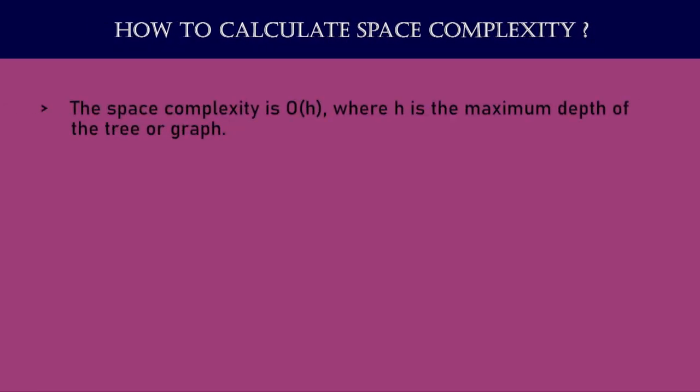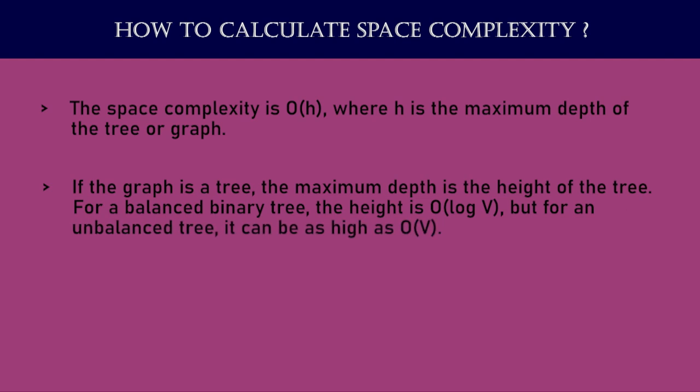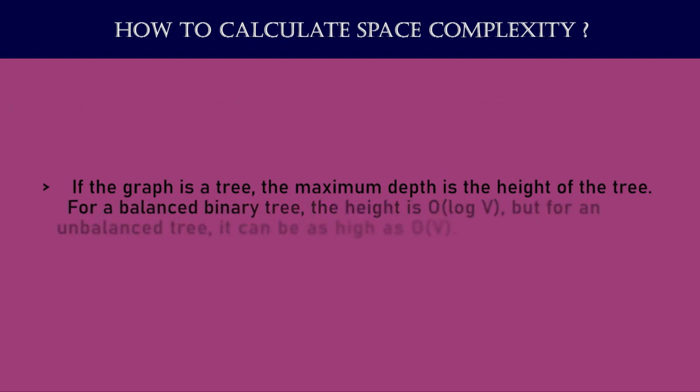Space complexity of DFS: the space complexity depends on the maximum number of nodes stored in memory at any given time, including the call stack used for recursion and any additional data structures used to track visited nodes. In the worst case, when DFS explores the deepest branch first and backtracks only after reaching the leaf node, the maximum depth of the call stack equals the depth of the tree or graph. Therefore, the space complexity is O(h), where h is the maximum depth of the tree or graph. For a balanced binary tree, the height is O(log V), but for an unbalanced tree it can be as high as O(V).